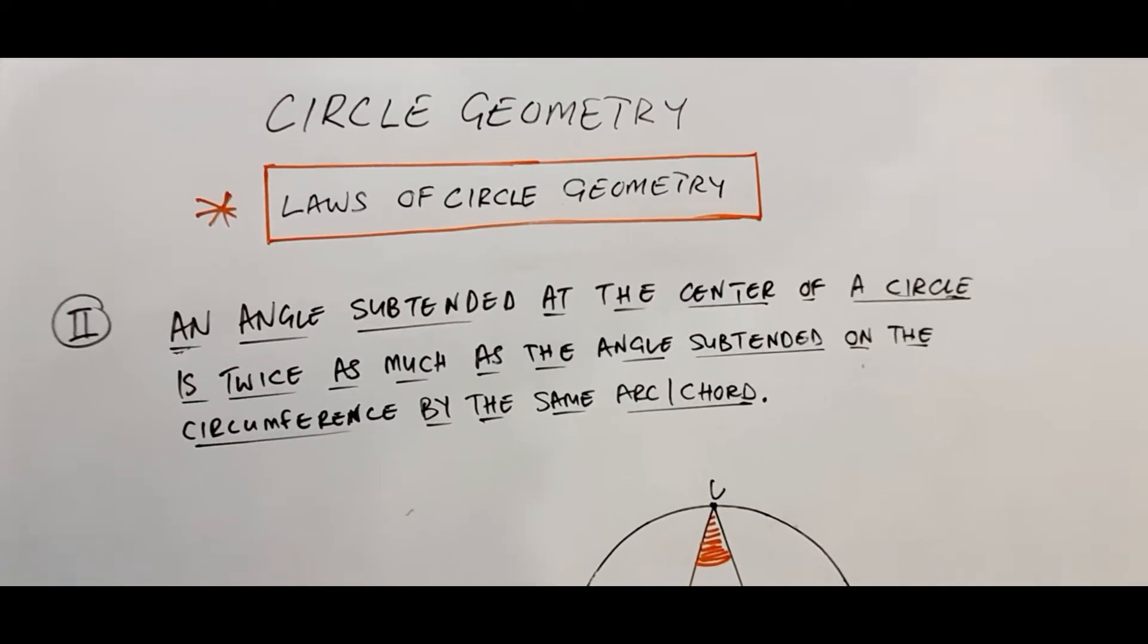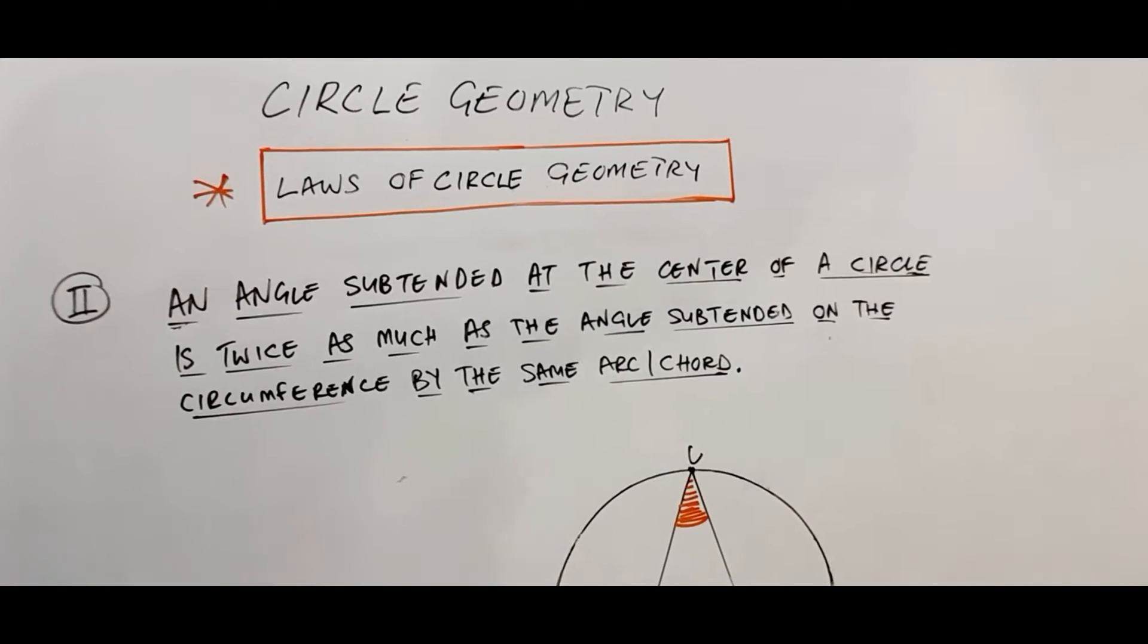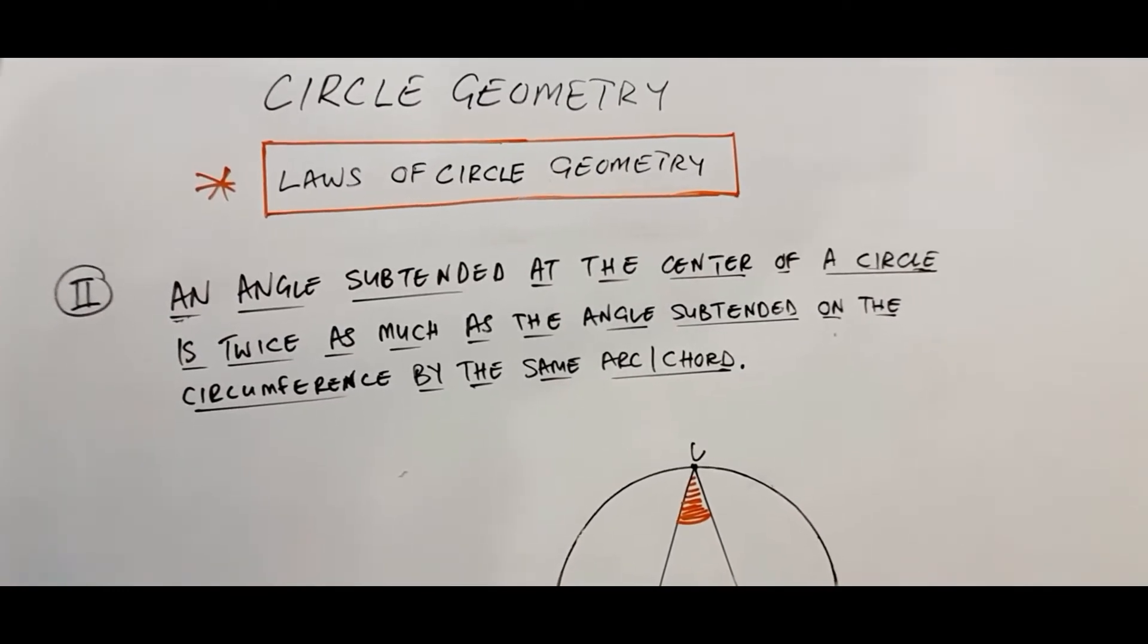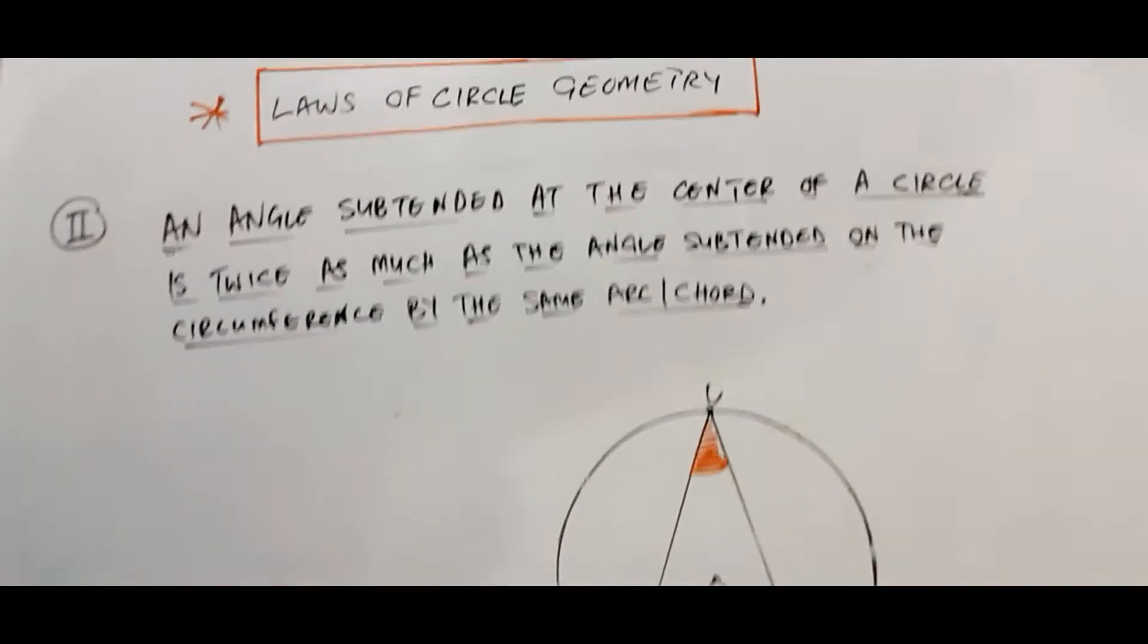An angle subtended at the center of a circle is twice as much as the angle subtended on the circumference by the same arc or chord. So what does this mean?